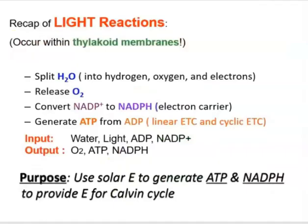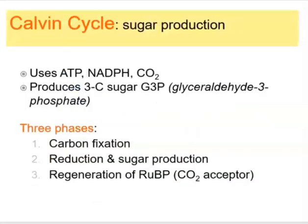This is important because the Calvin cycle uses more ATP than NADPH, so cyclic electron transport ensures the production of extra ATP that the Calvin cycle needs. To recap light reactions: they take place in the thylakoid membranes, water is split, oxygen is released, NADPH and ATP are generated. The overall purpose is to convert solar radiant energy into chemical energy in the form of ATP and NADPH.